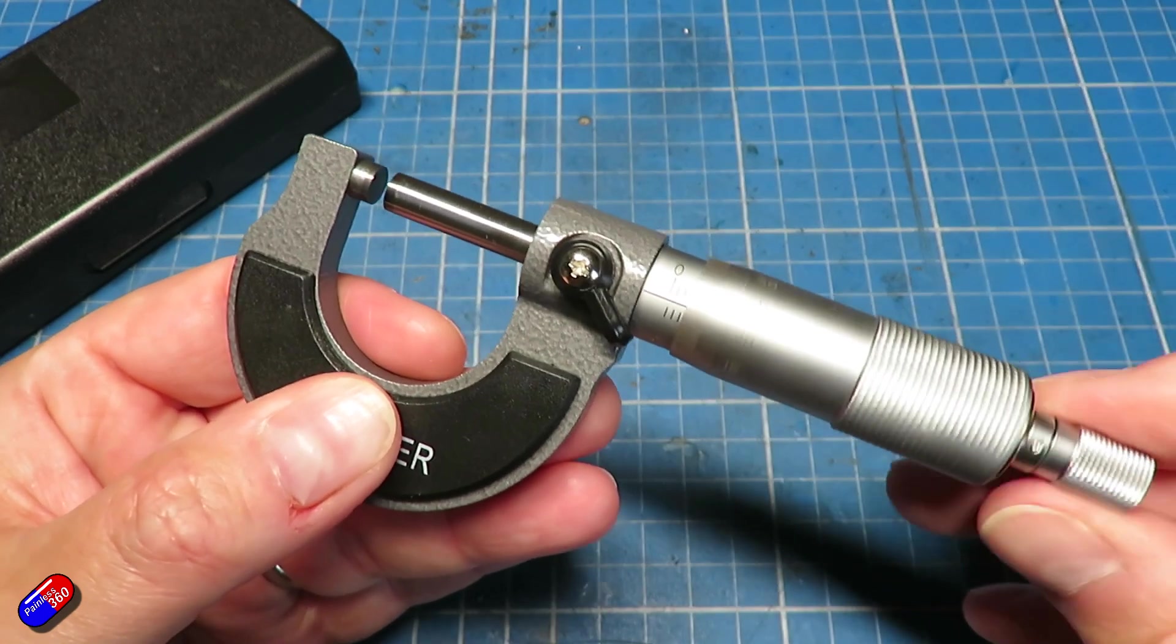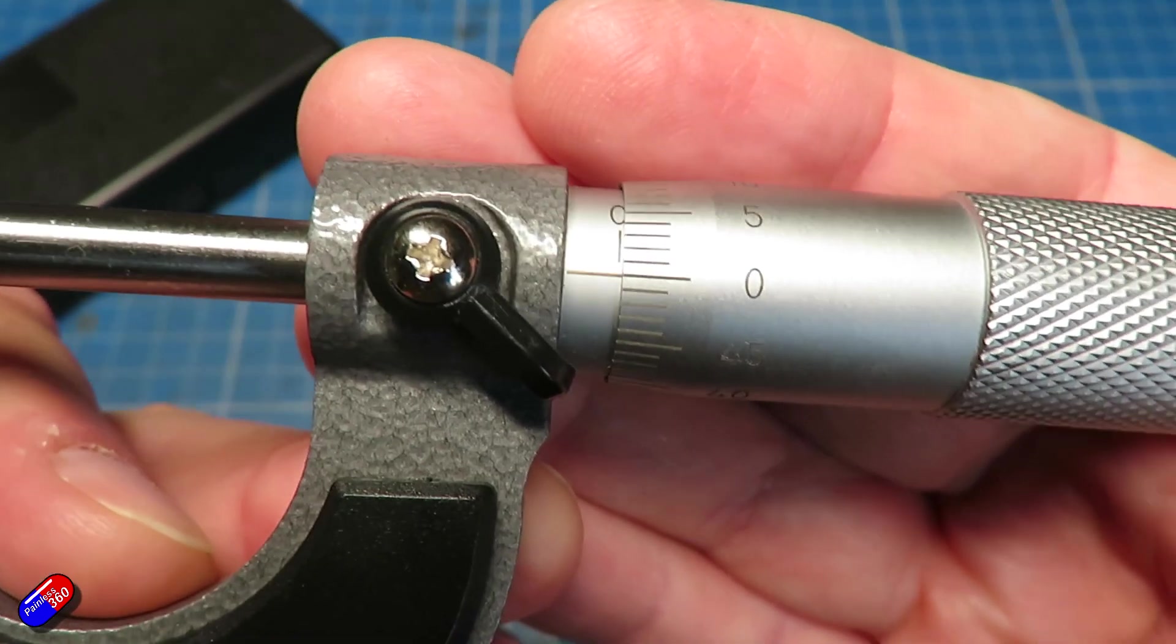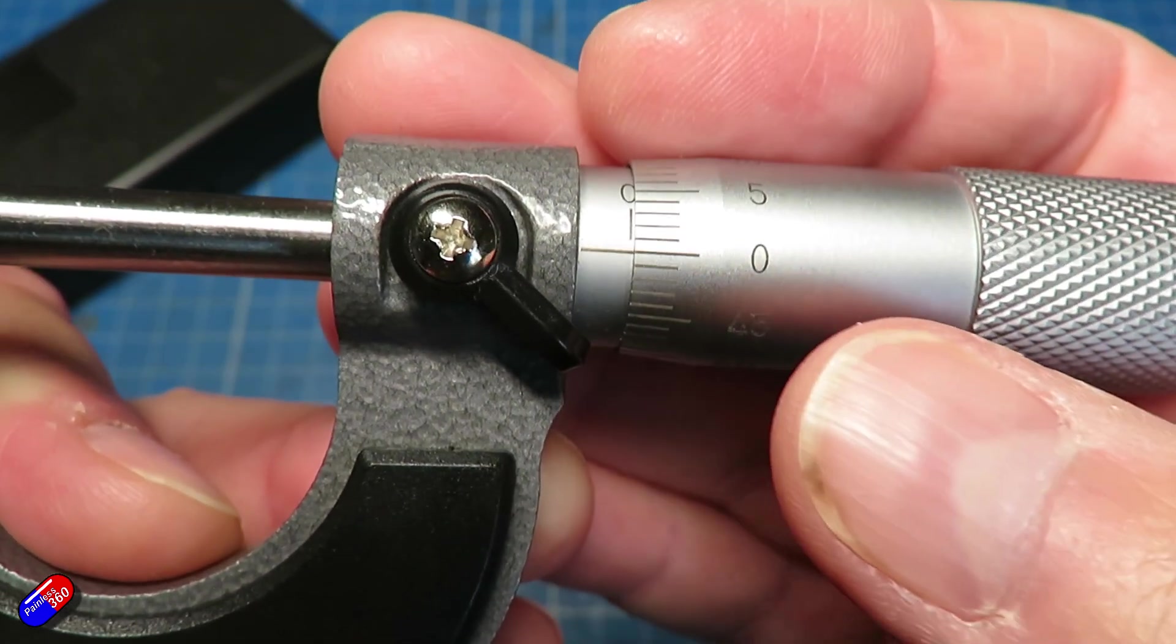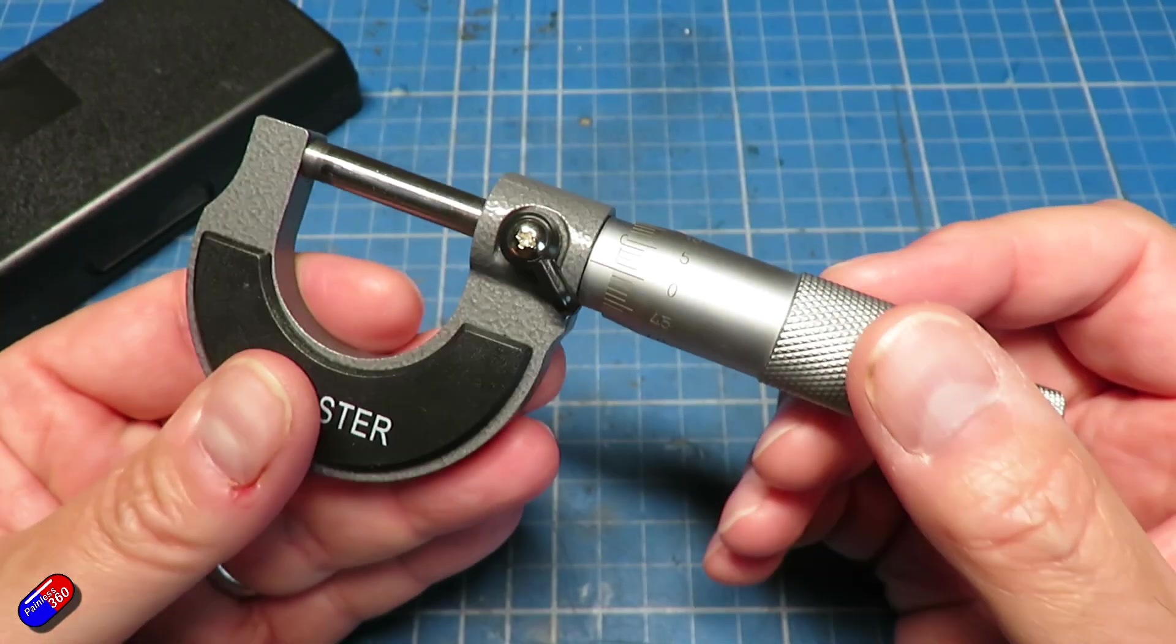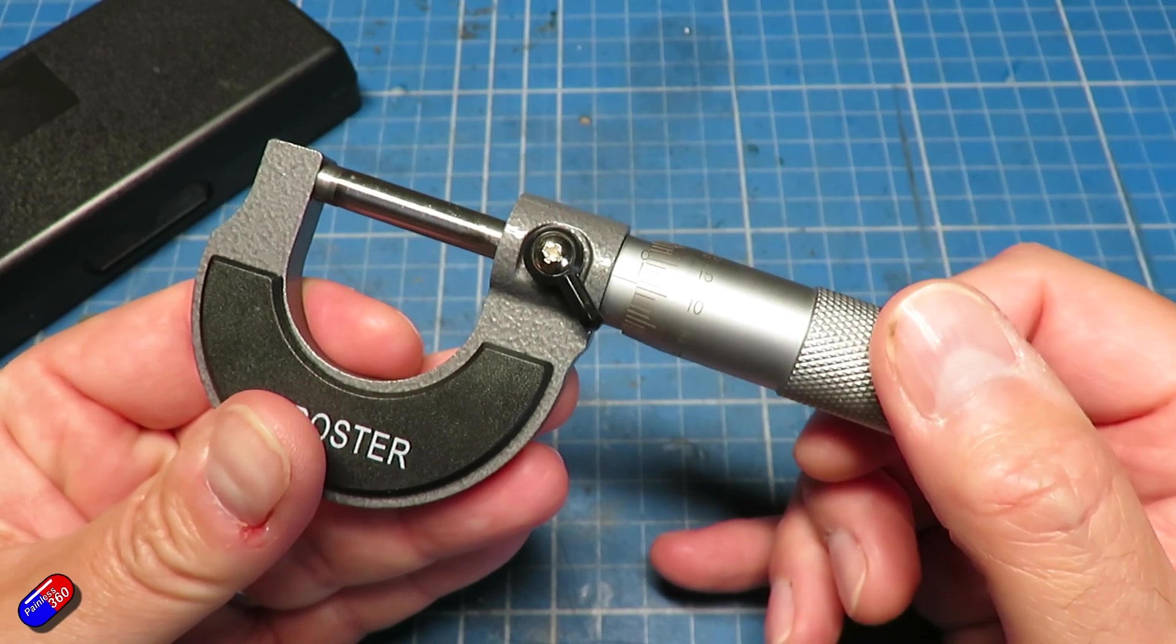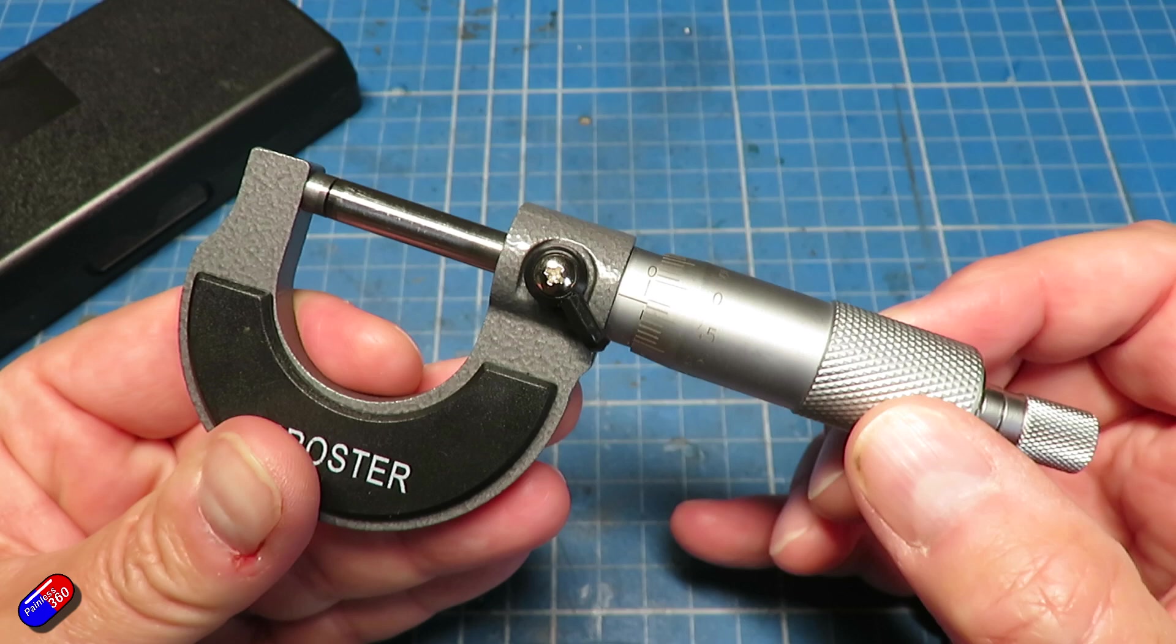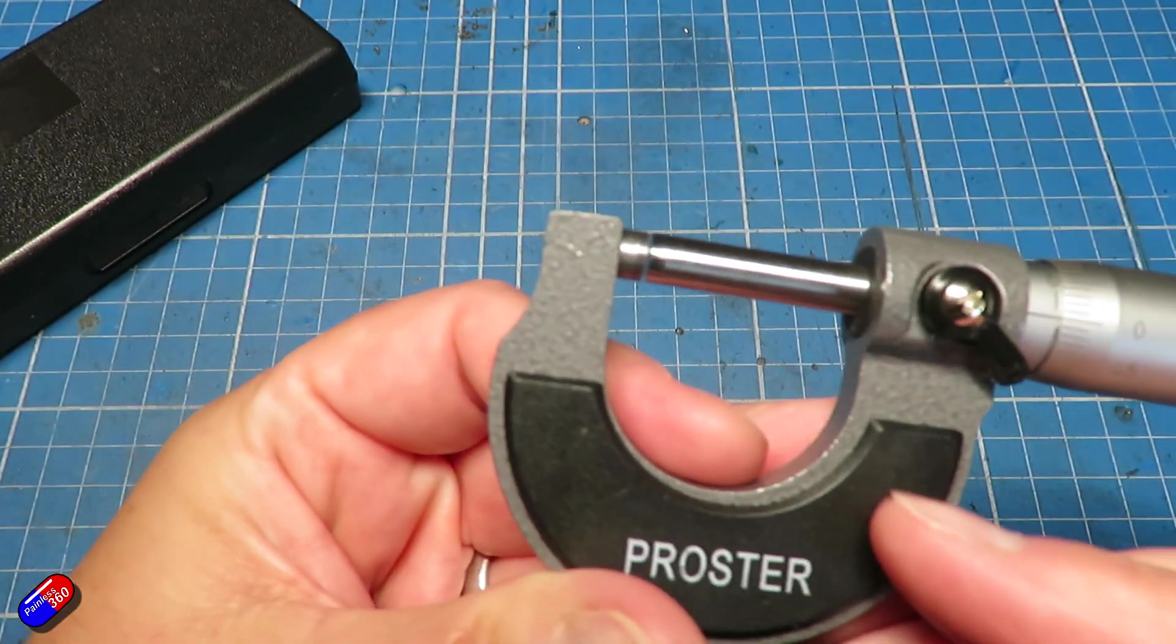If I close this all the way up, you'll notice the zero on the front matches up with the zero on the left hand side. As I unwind it, these numbers will change and go all the way back to zero - that is half a millimeter.